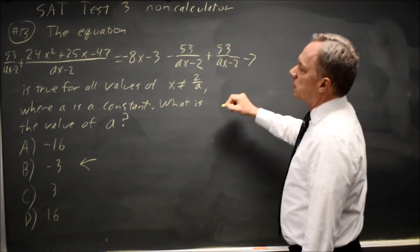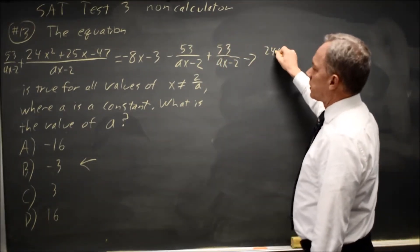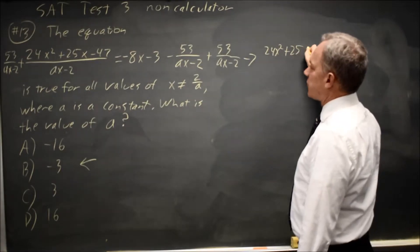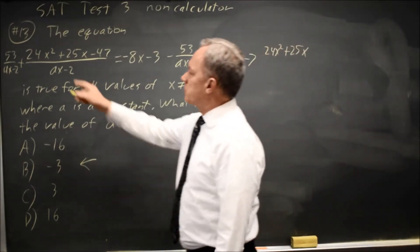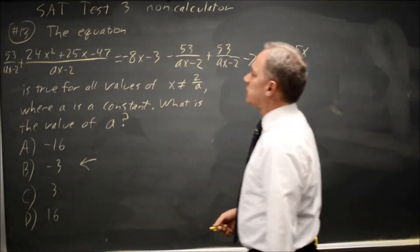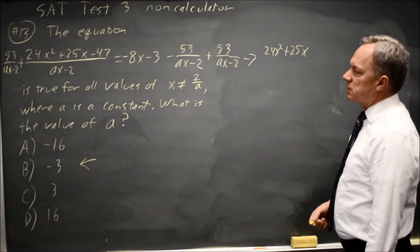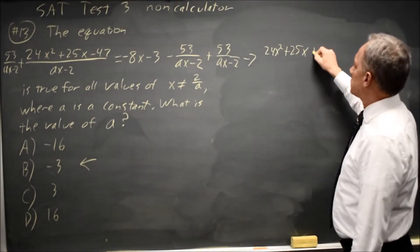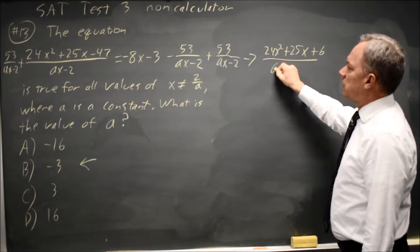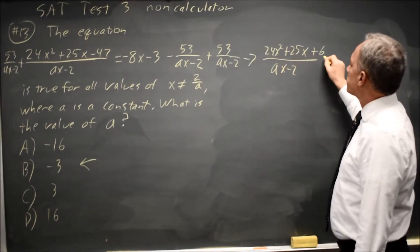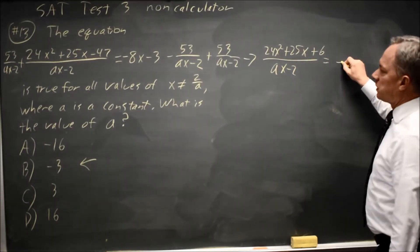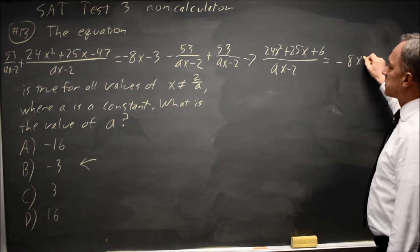this gives me 24X squared plus 25X plus 53 minus 47 is plus 6, over AX minus 2 equals negative 8X minus 3,